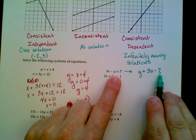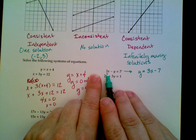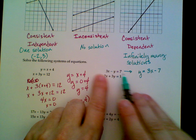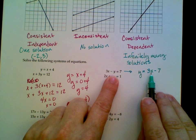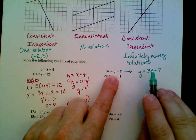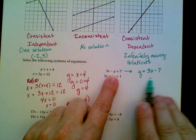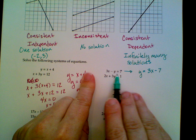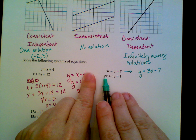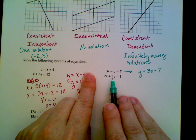Now, this one was nicely set up for substitution. I had y equals everything else on this side. I don't have that over here, but it is pretty easy to rearrange this first equation. If I add y to both sides and subtract 7 from both sides, I get y is equal to 3x minus 7. So this equation is equivalent to this equation. If I graphed them both, they would have the same graph.